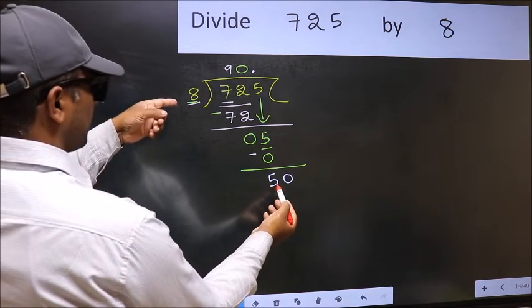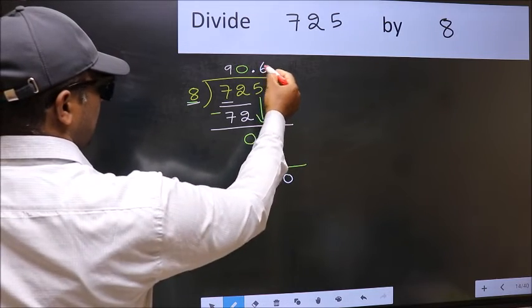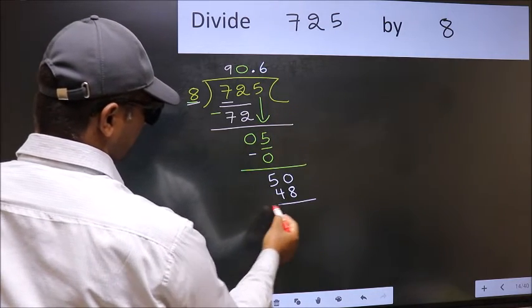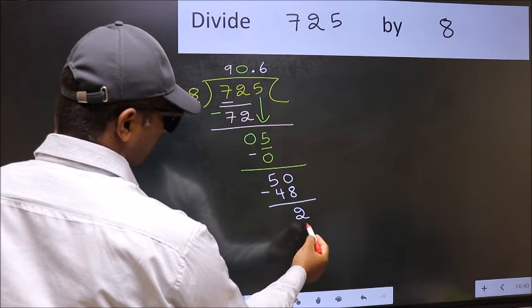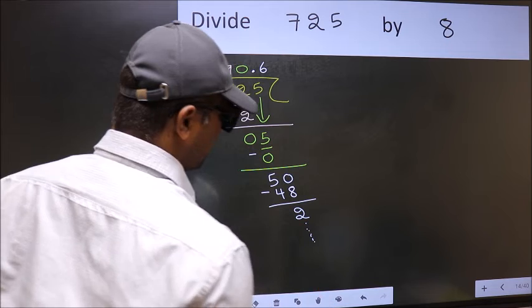A number close to 50 in 8 table is 8, 6, 48. Now you subtract. We get 2. And continue the division. I am not doing that.